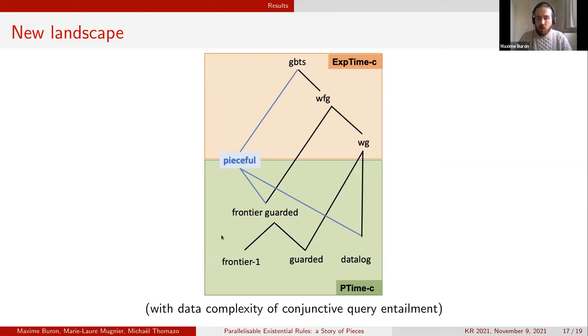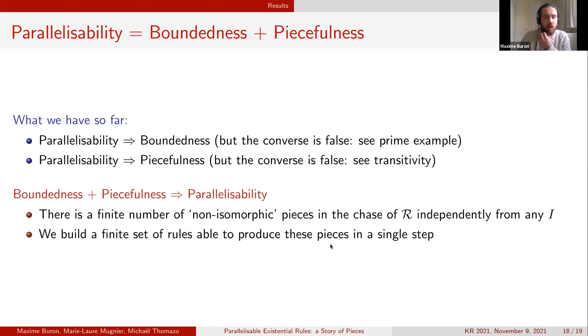The class of peaceful rules is already quite interesting because it contains the frontier-guarded rules and the datalog rules. What we have done so far is to show that parallelisability implies boundedness but the converse is false because we have the prime example.